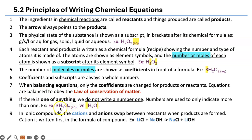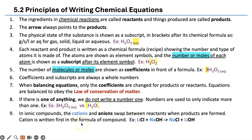For example, if you have one mole of H2O, you don't put a one in front — you just write H2O. Since there is only one mole of oxygen atoms in H2O, you do not write H2O1. In ionic compounds, the cations and anions swap between the two ingredients to form the product. The cation is always written first in the formula of a compound, as we learned in 4.2 ionic compounds.